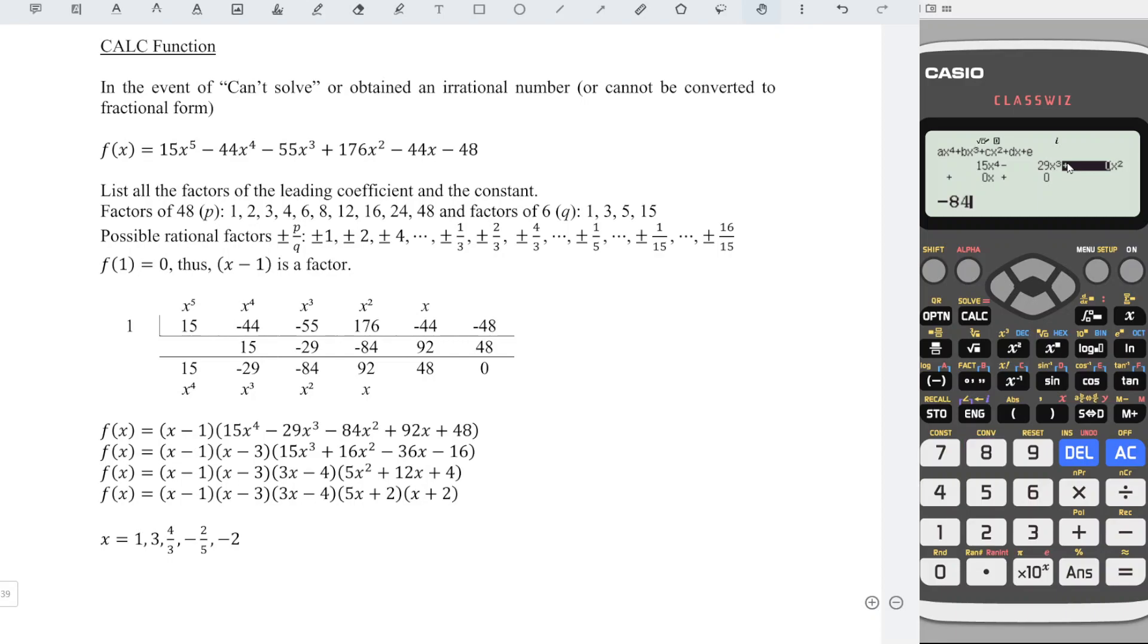negative 84, equal, 92, equal, 48, equal. Press equal again and we should obtain x1 equal to 3, x2 equal to 4 over 3, x3 equal to negative 2 over 5, x4 equal to negative 2. So which means that we already obtained all the zeros.